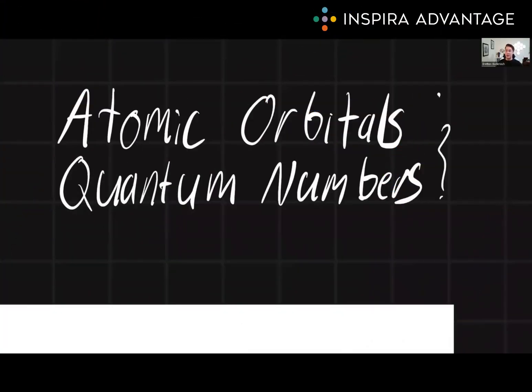Today, we're going to talk about atomic orbitals and quantum numbers. This is a crucial topic for your MCAT prep as it forms the foundation of understanding electron configuration and atomic structure. This is a big topic tested on the Chem/Phys section. Let's dive on in.